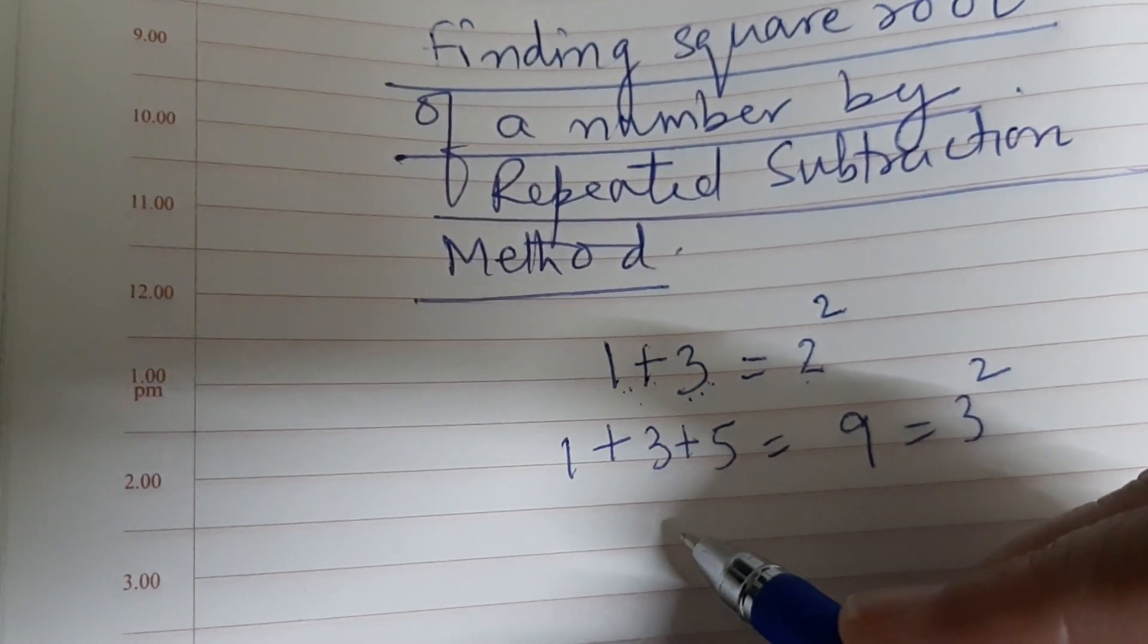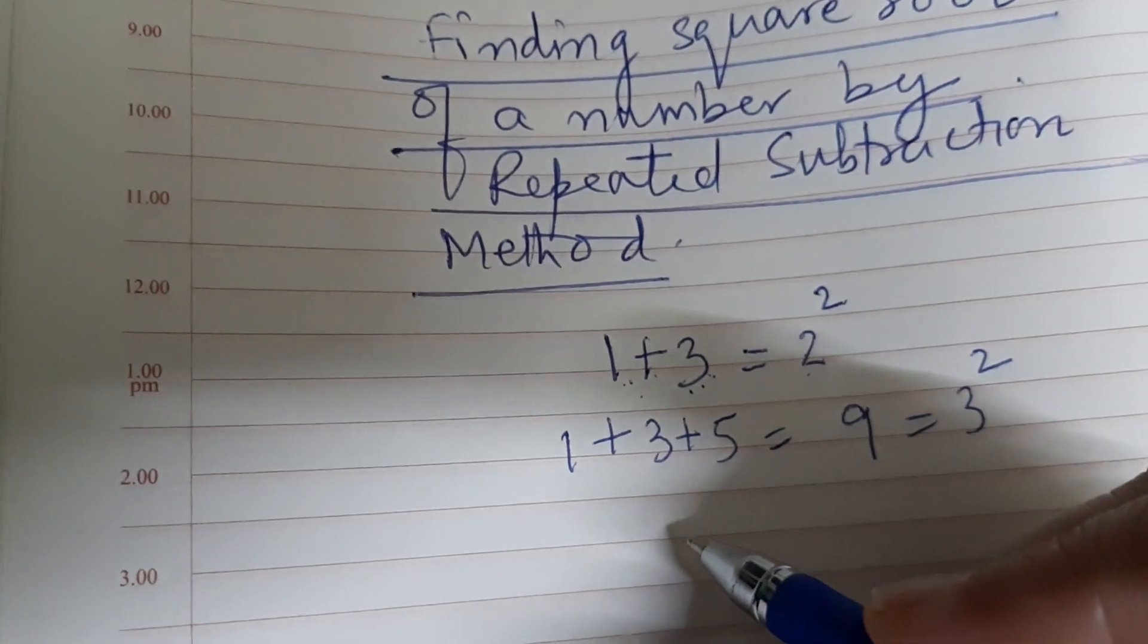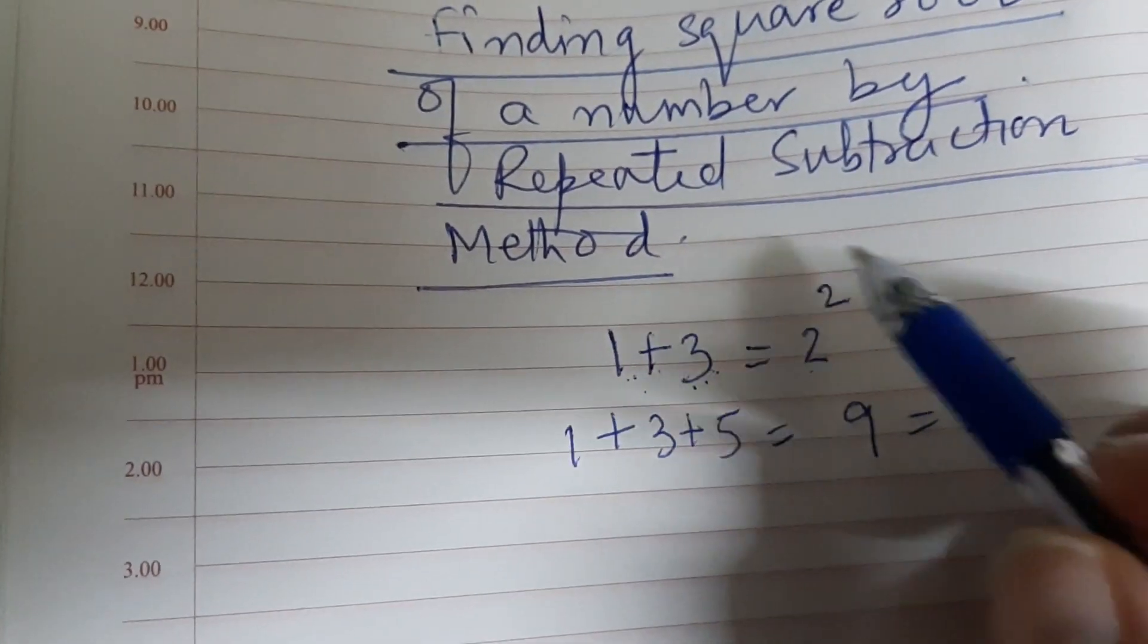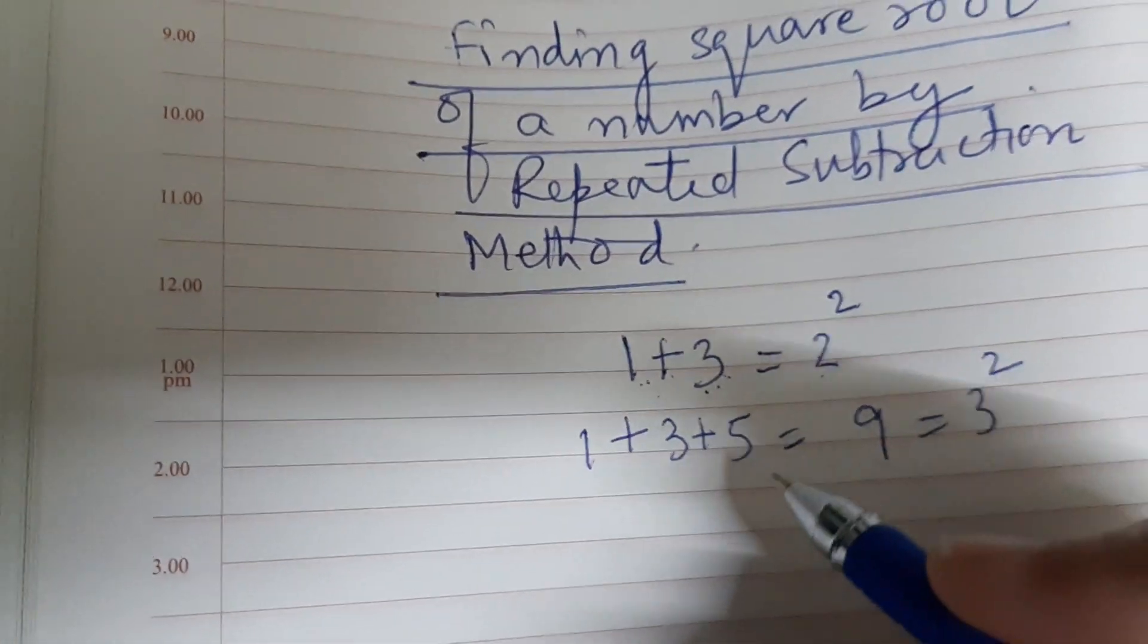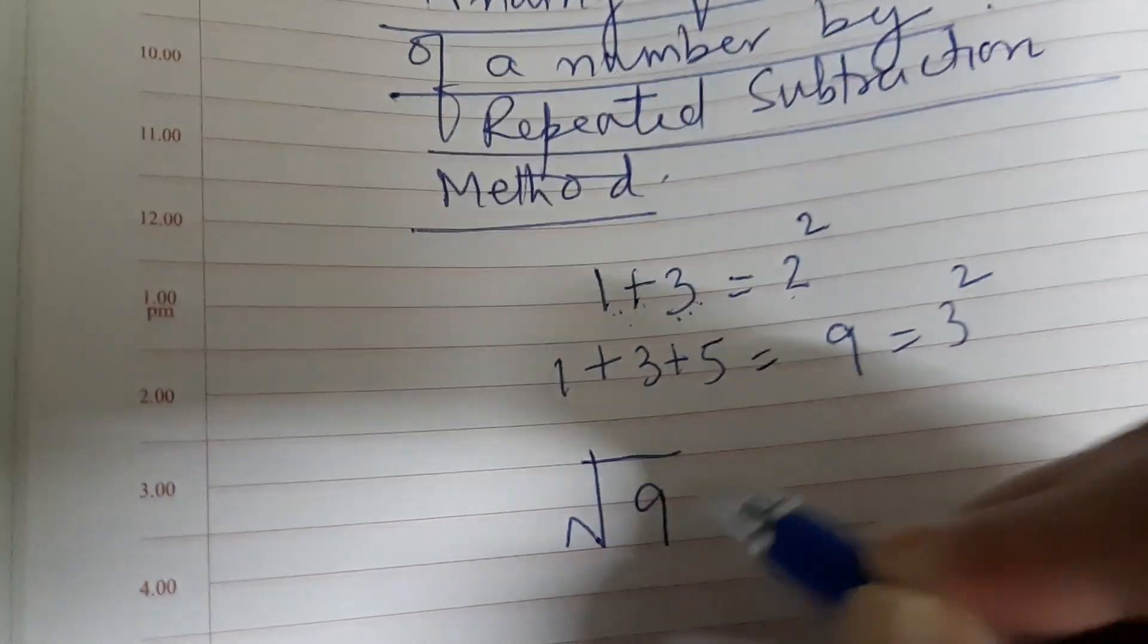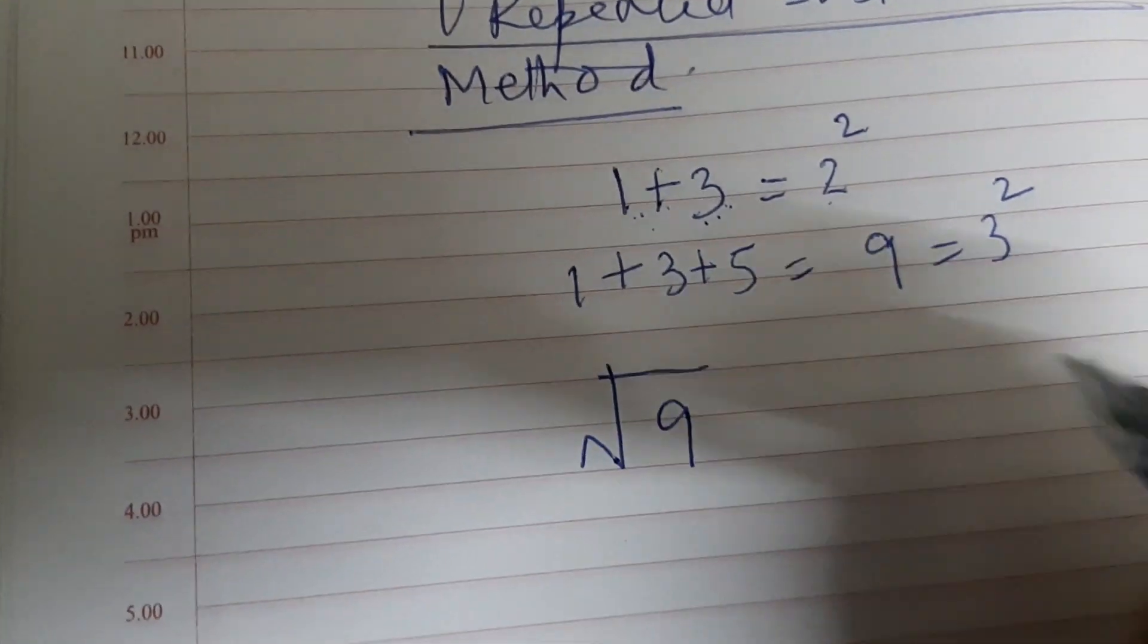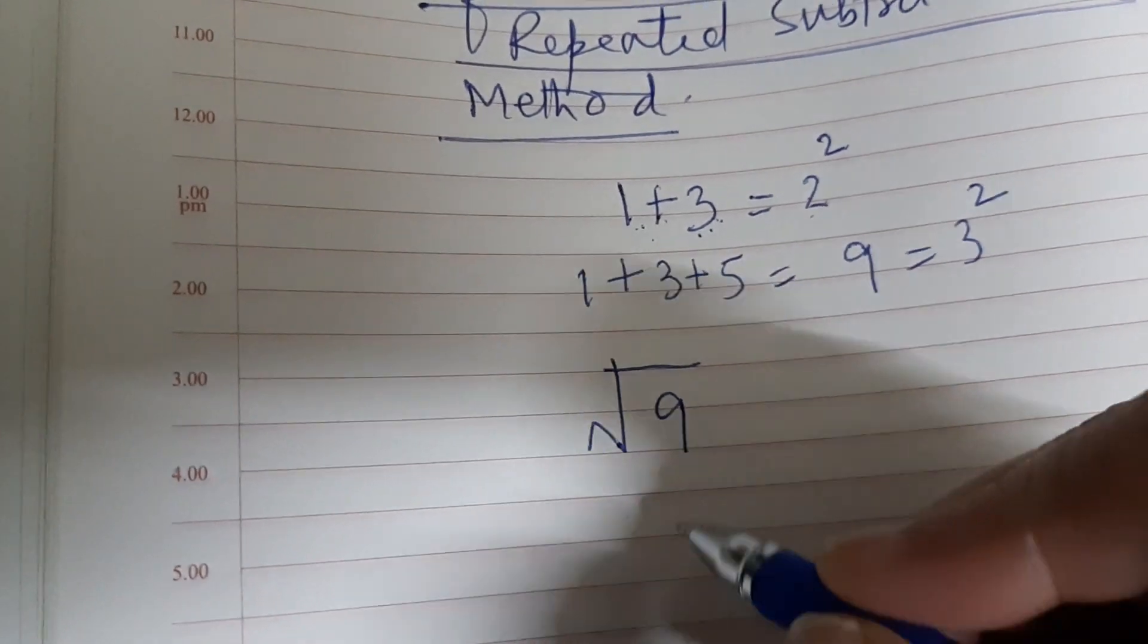Square root of 9. I am taking a very simple example here. The number is 9 and we have to find its positive square root. So I am subtracting from 9 the first odd number, which is 1.